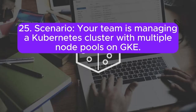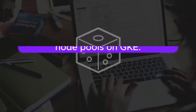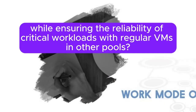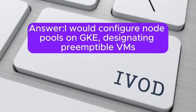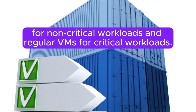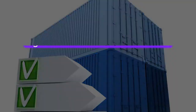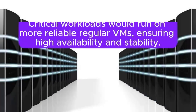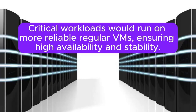Scenario 25: Your team is managing a Kubernetes cluster with multiple node pools on GKE. How would you optimize costs by using preemptible VMs for certain node pools while ensuring the reliability of critical workloads with regular VMs in other pools? Answer: I will configure node pools on GKE, designating preemptible VMs for non-critical workloads and regular VMs for critical workloads. Auto-scaling policies can be adjusted to use preemptible instances when available, optimizing costs. Critical workloads would run on more reliable regular VMs, ensuring high availability and stability.